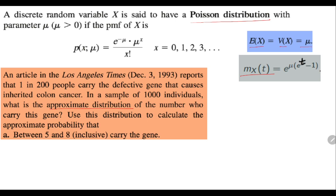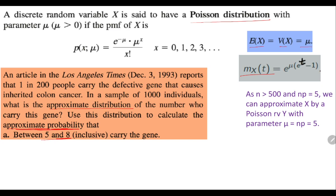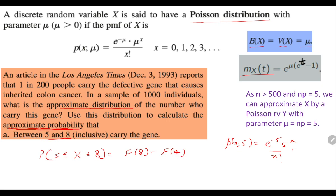The same question asks for the approximate distribution and then to use it to calculate the approximate probability of between 5 and 8 individuals carrying the gene. The approximate distribution is Poisson with mu equal to np = 1000 × (1/200) = 5. So P(X = x; mu=5) = e^(−5) × 5^x / x!. The required probability P(5 < X < 8) = F(8) − F(4). Using the Poisson CDF table, the values of F(8) and F(4) give the required answer.